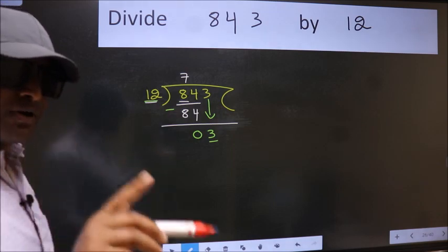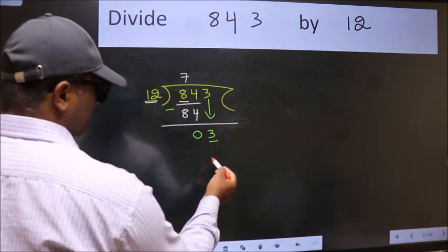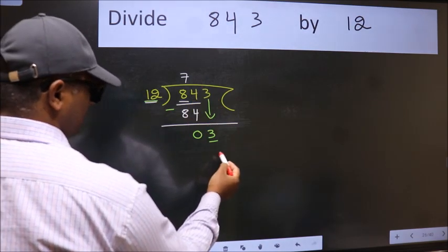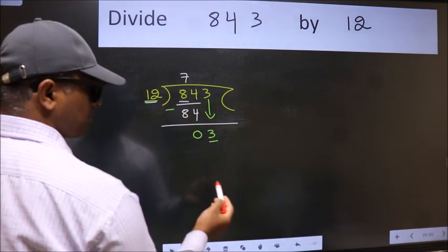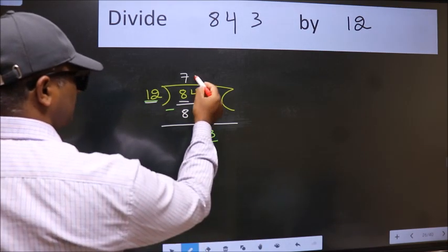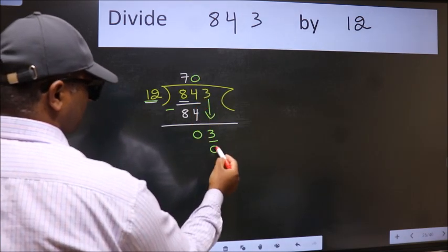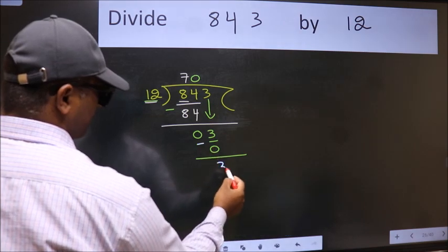Instead of that, what should we do? Which number should we take here? If I take 1, we get 12, but 12 is larger than 3. So what we do is take 0 here. 12 times 0 is 0. Now we subtract and get 3.